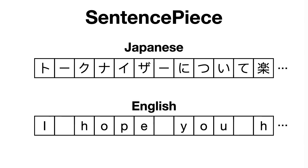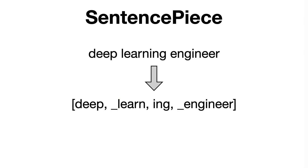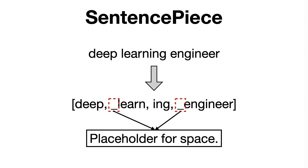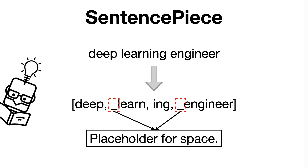The SentencePiece tokenizer tries to solve this issue by treating the input text as a stream of characters, whitespace included, and it does that by employing the same merging algorithm as in BPE or the Unigram tokenizer, which works the other way around and initializes its base vocabulary to a large number of tokens, and then progressively trims down each token to obtain a smaller vocabulary until the desired size is achieved. For instance, the resulting tokens after applying the SentencePiece tokenizer on the 'Deep Learning Engineer' sentence could look something like this. You can see that we have an underscore before certain tokens, which is simply a placeholder for the space. Compared to BPE or WordPiece, this allows us to reconstruct the original sentence by simply concatenating the tokens and replacing the underscore with space.